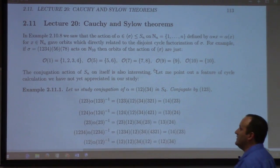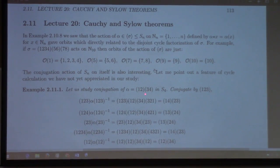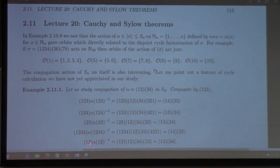So let's look at conjugation of a permutation. In this case I'm going to look at alpha = (1,2)(3,4) in S4. What happens if I conjugate by (1,2,3), then conjugate by (1,2,4), then conjugate by (2,3), then conjugate by (1,2,3,4), and conjugate by (1,2)? So here I have a list of conjugates.